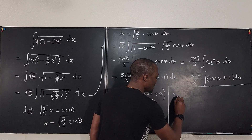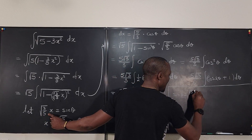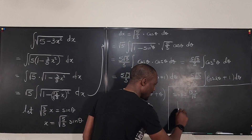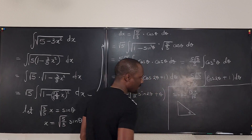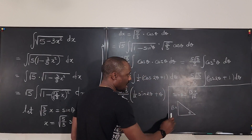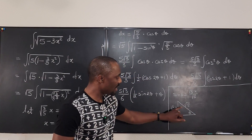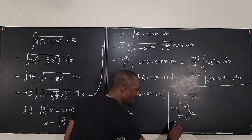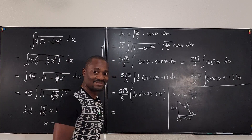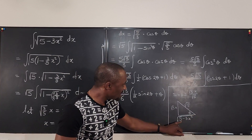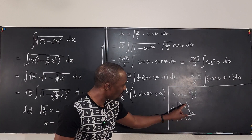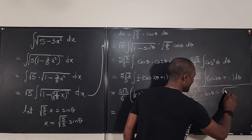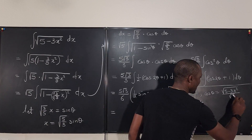I know that sine theta equals the square root of 3x over the square root of 5. When I draw a triangle, this is theta; the opposite side is the square root of 3x, and the hypotenuse is the square root of 5. The adjacent side is the square root of 5 minus 3x squared — which is the original expression under the square root. So cosine theta is adjacent over hypotenuse: the square root of 5 minus 3x squared, divided by the square root of 5.